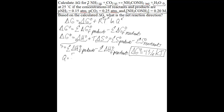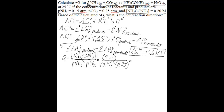So Q equals products over reactants: the concentration of NH2CONH2 divided by the partial pressure of ammonia gas squared — squared because the stoichiometric coefficient for ammonia in the balanced equation is 2 — multiplied by the partial pressure of CO2 gas. Substituting the given values: Q = 0.20 divided by (0.15 squared times 0.25), which gives a Q value of 35.556.